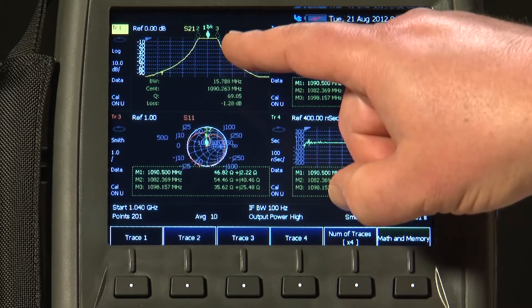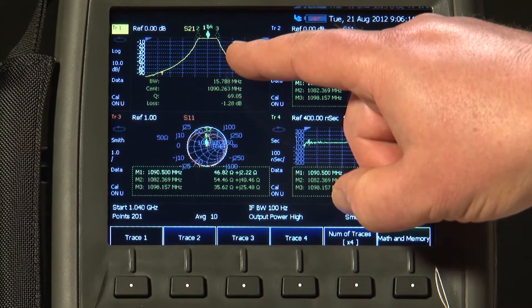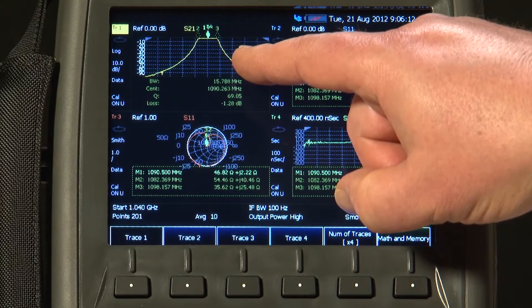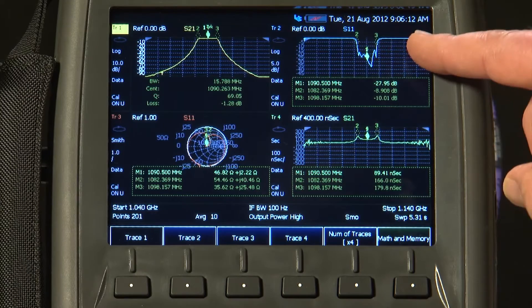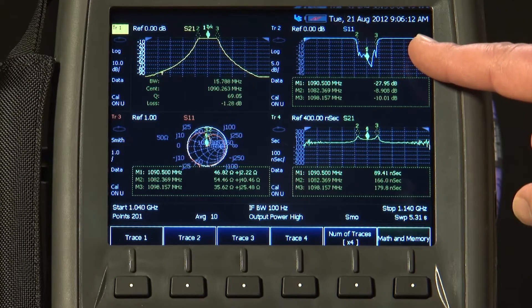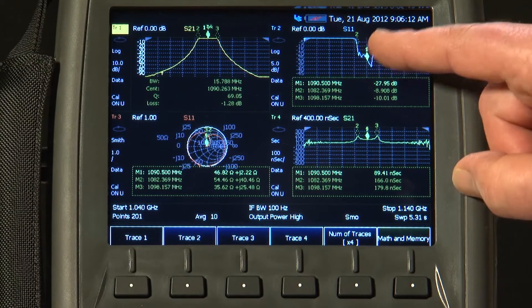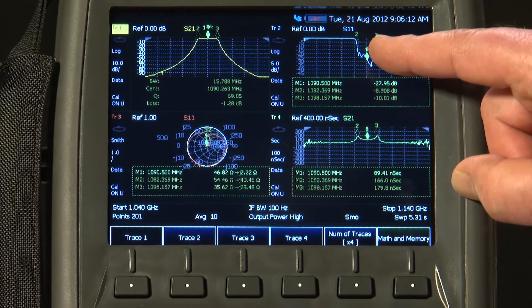So here, in the top left, we have got Trace 1, still measuring the insertion loss, S21 of the filter, but in Trace 2, I am measuring S11, the return loss of the filter. And you can see the same three markers are still present on that display as well.